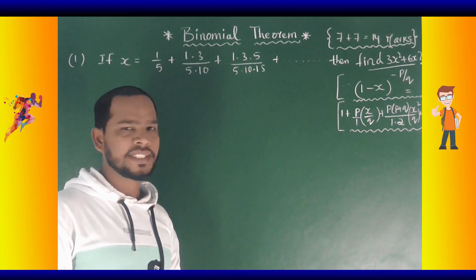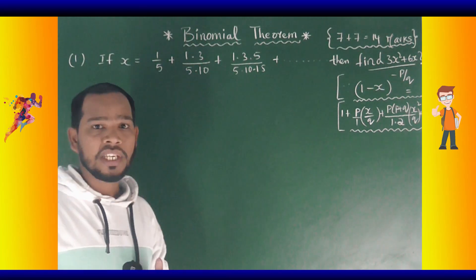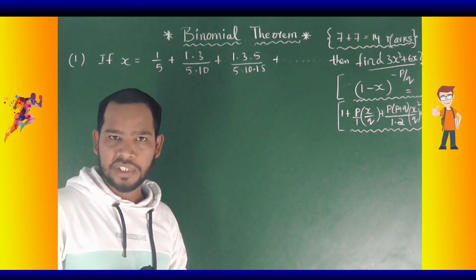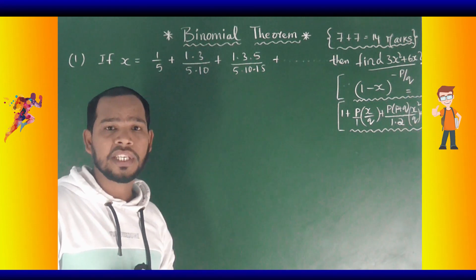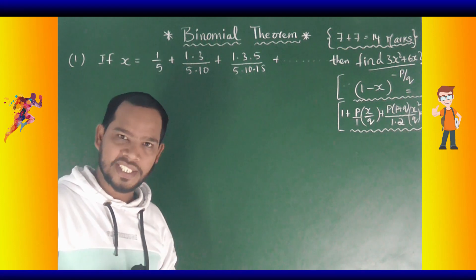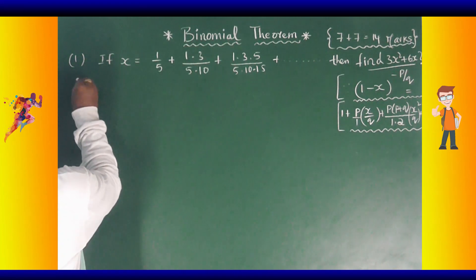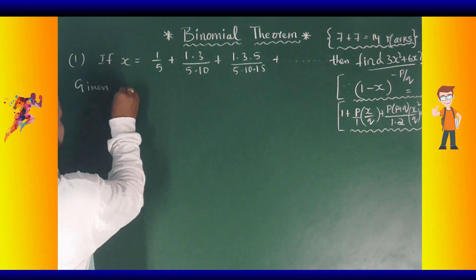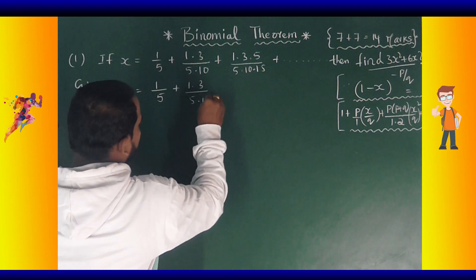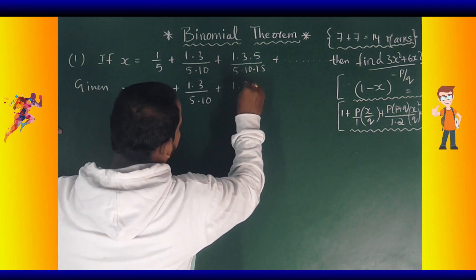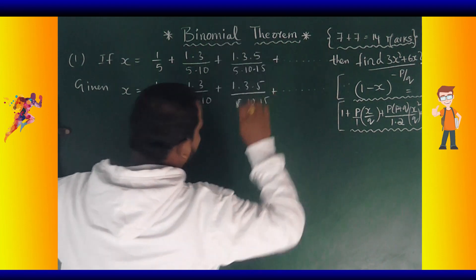What we have to find? 3x² plus 6x. This is an infinite series. This is not a complete series, so we have to add the first term 1 into 1. Both left-hand sides — by 5 into 10 into 15 plus up to so on.